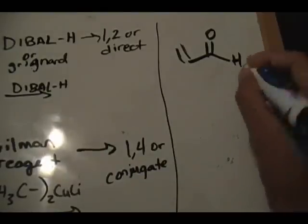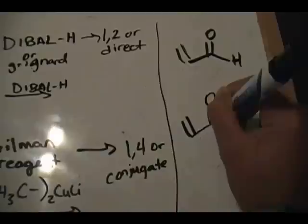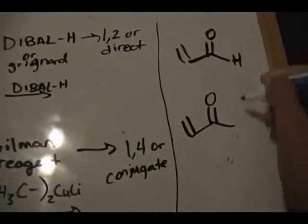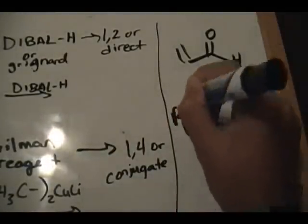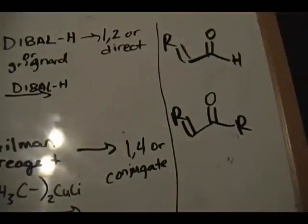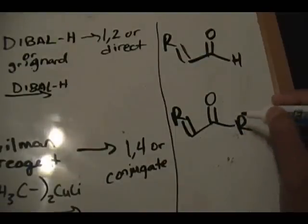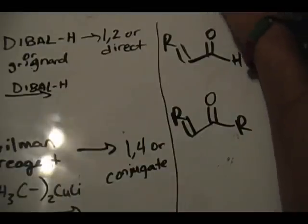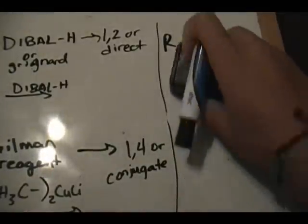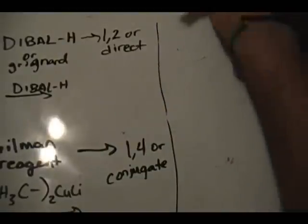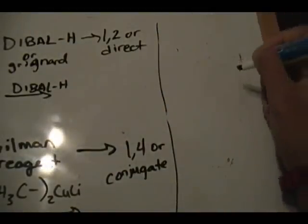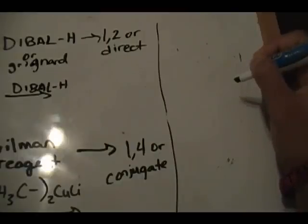This is our alpha-beta unsaturated aldehyde. Our alpha-beta unsaturated ketone will typically look something like this — replace the H with a carbon group, so we put R groups there to be more generic. This could very well be in a ring structure. Pause the video after I draw the structure and determine whether or not this is an alpha-beta unsaturated ketone or aldehyde.